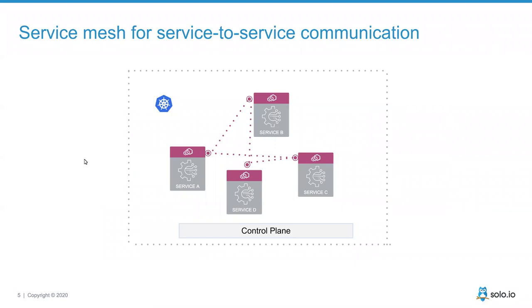When you deploy Envoy at scale across a hybrid environment with different types of applications, you need a way to drive configuration consistently. This is where the service mesh concept comes in: the proxies or interceptors in with the application form the data plane, and a controlling mechanism — a control plane — provides an API that allows operators, developers, SREs, and automation to drive the behavior of the data plane.